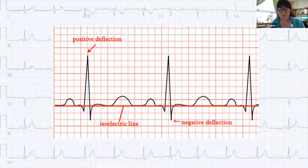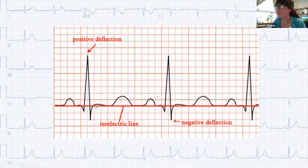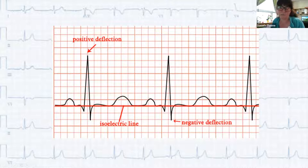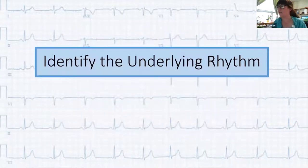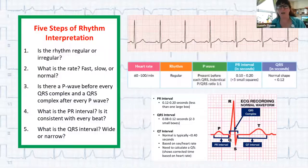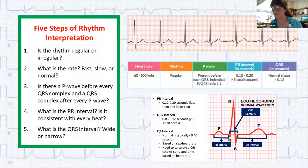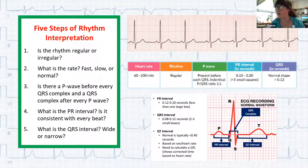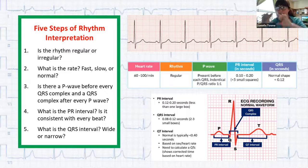The isoelectric line is important to understand — it's that invisible line on the EKG recording showing where electrical activity is at rest, and it comes into play when talking about elevation and depression. When you get your printout, the first thing to do is figure out the underlying rhythm: is there something you need to immediately address? Check for regular or irregular rhythm, rate, P waves, QRS complexes, and normal PR intervals. The bottom lead 2 strip is really useful for this.